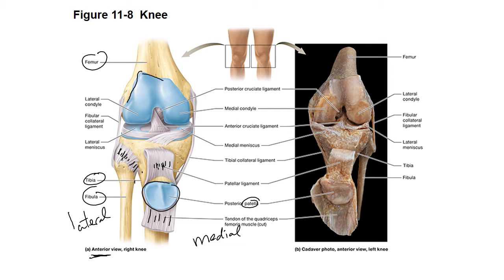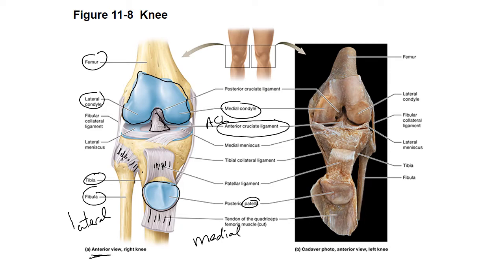We have this blue part going all the way down around here and here — that is hyaline cartilage — so you have the lateral condyle and the medial condyle of the femur, the 'butt cheeks' of the femur. We have the anterior cruciate ligament, ACL, which comes forward. It's called anterior cruciate because it connects to the tibia at the anterior part of the tibia. The PCL goes backwards and connects to the posterior part of the tibia.